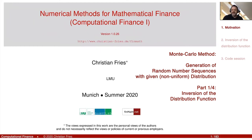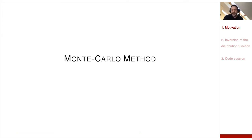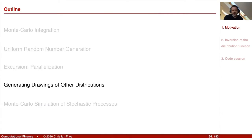Welcome to the next session on Numerical Methods. We are still in the larger chapter on the Monte Carlo Method, with maybe one or two more sessions in this one. Today I'd like to start a new section. We looked at Monte Carlo integration and uniform random number generation, had an excursion into parallelization, and today I'd like to discuss how we can generate random number sequences of other distributions.